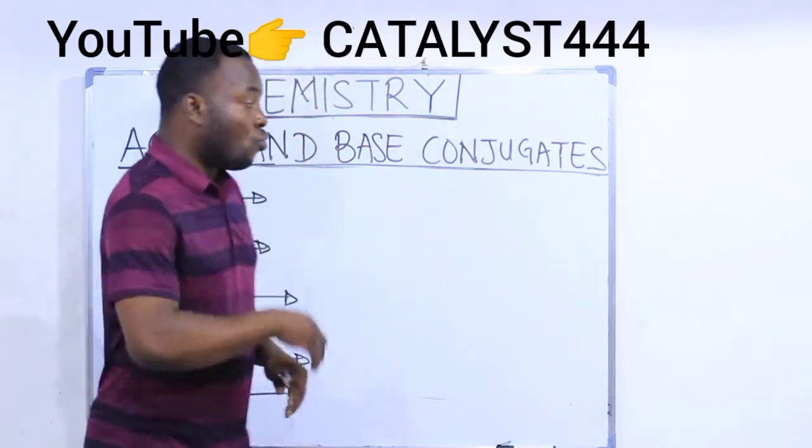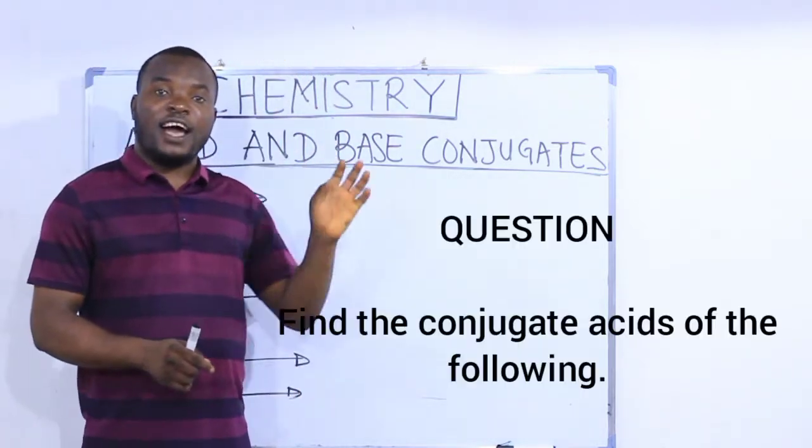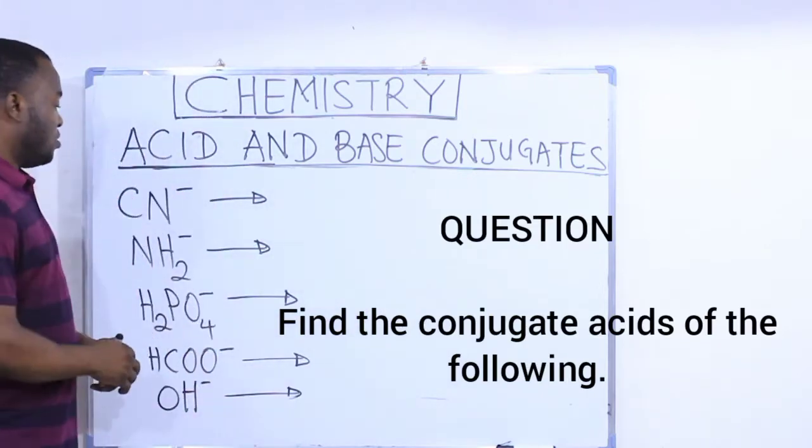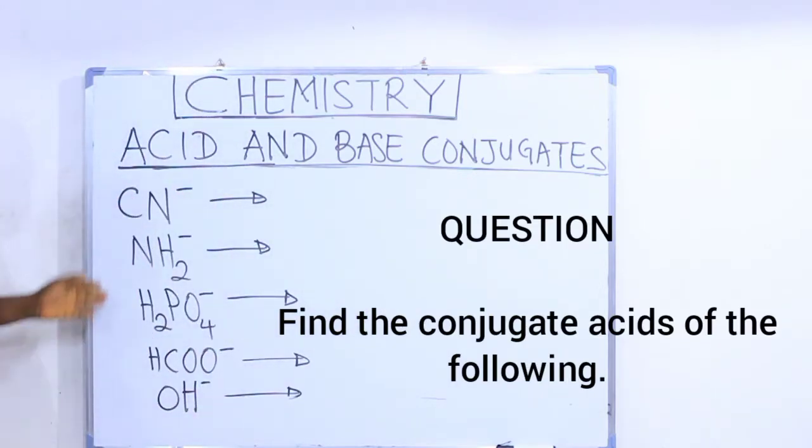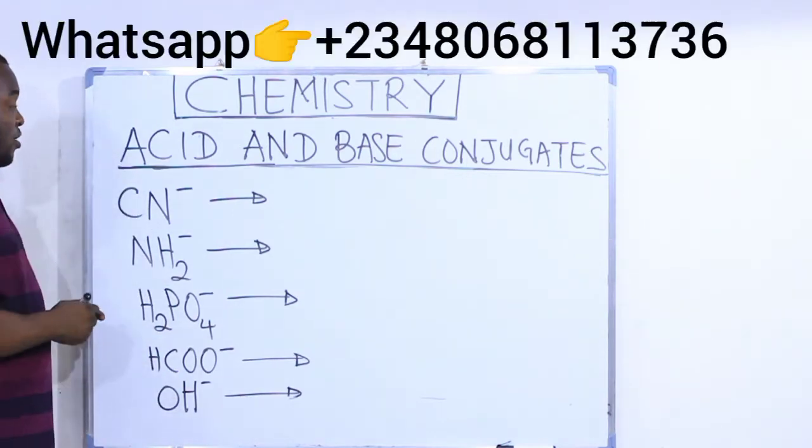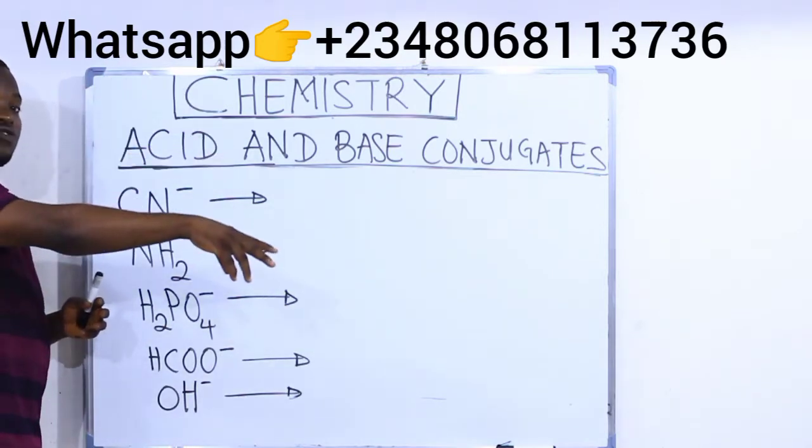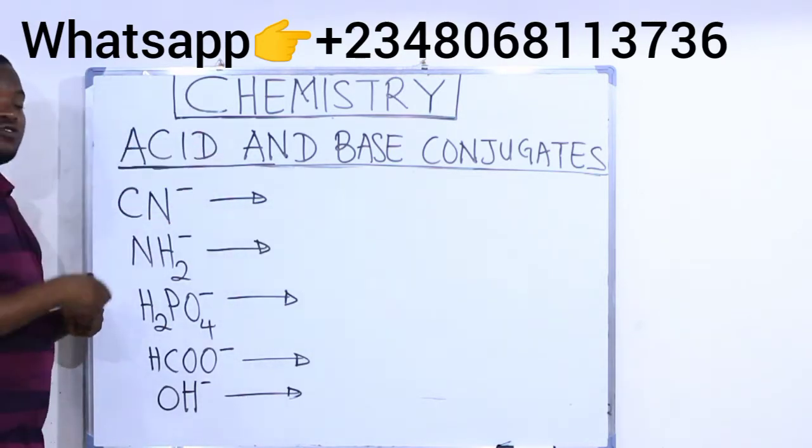So they are opposite. Now the question here says, find the conjugate acid of the following. Here on the board are the substances given. So let's find the conjugate acid. To find the conjugate acid, all you need to do, add one hydrogen atom, add a plus charge.